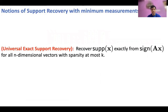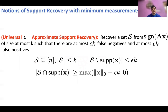There are three notions of support recovery with minimum number of measurements that we care about in this paper. The first is universal exact support recovery, where we want to recover the support of x exactly from sign(Ax). The designed measurement matrix must be universal, that is, it should work for all n-dimensional vectors with sparsity at most k.